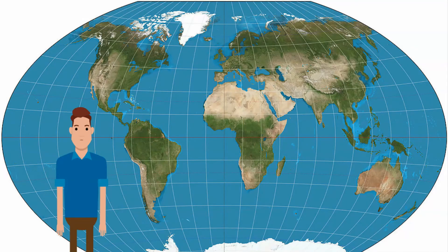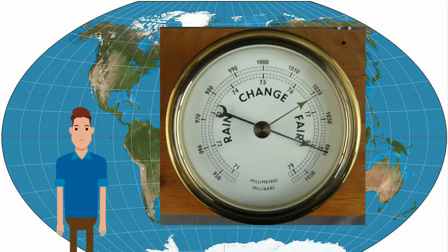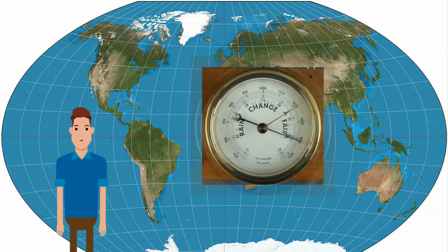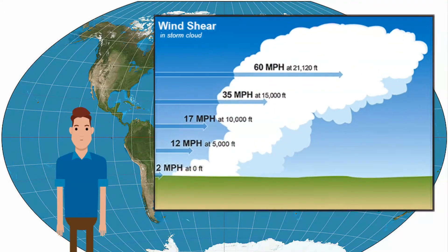Condition two: air pressure. This must be in areas of unstable air pressure, usually where areas of high pressure and low pressure meet, so that warm air rises more readily and clouds can form. This air must also be humid for cloud formation — warm air rises because it is less dense than cold air. Condition three: wind shear. Winds must be present for the swirling motion to form, but not too strong or the storm system will be ripped apart in the early stages.